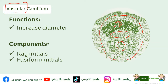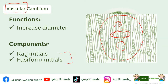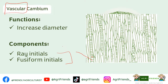Both ray initials and fusiform initials are small flattened cells with thin walls. When we zoom in, we can see that ray initials are short and small, while fusiform initials are long and narrow.